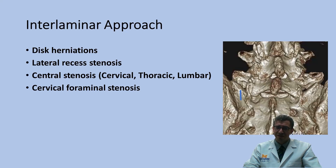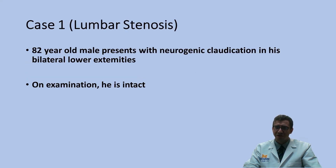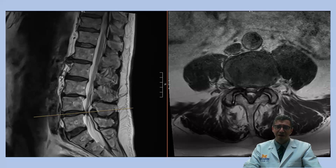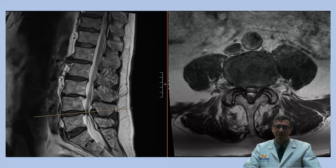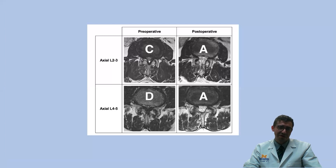I wanted to showcase an example of the interlaminar approach treating central and lateral recess lumbar stenosis. This patient presented with neurogenic claudication in bilateral lower extremities, with examination intact. Imaging showed multilevel stenosis worst at L4-5 with pretty severe stenosis there, and moderate stenosis at L3-4. He had exhausted conservative measures, was a candidate for surgery, and specifically for a two-level laminectomy.